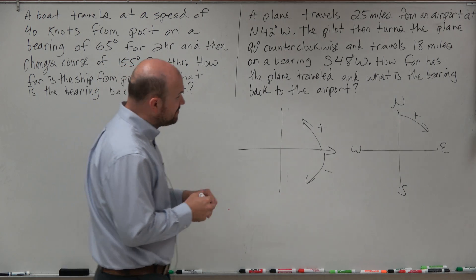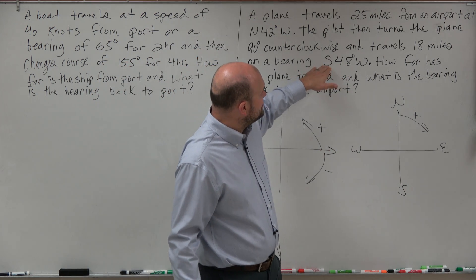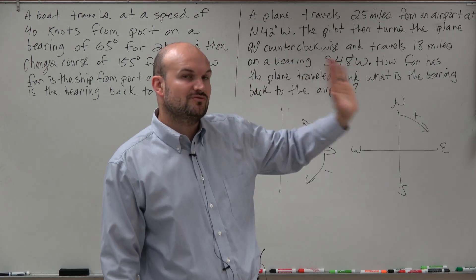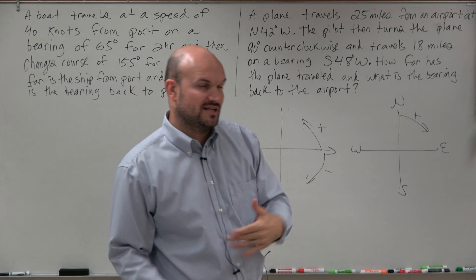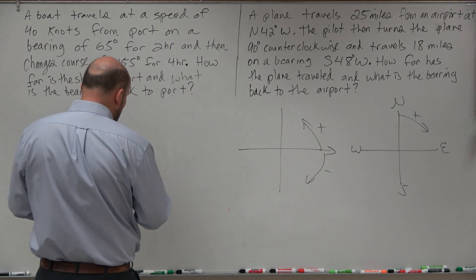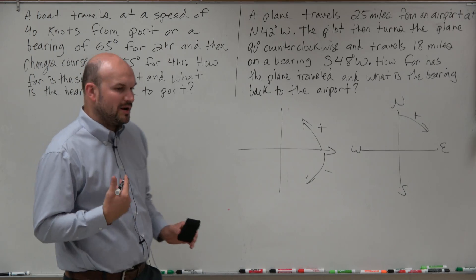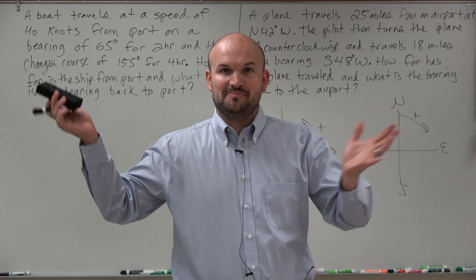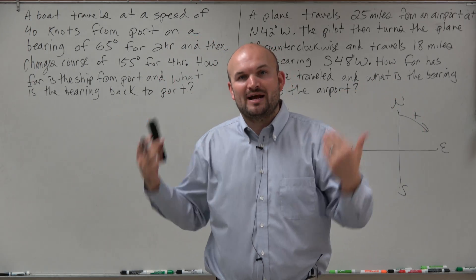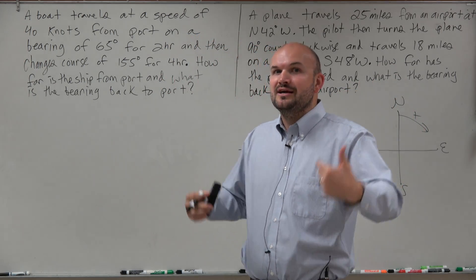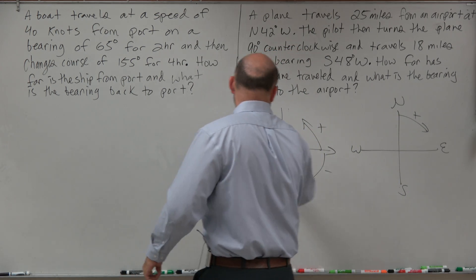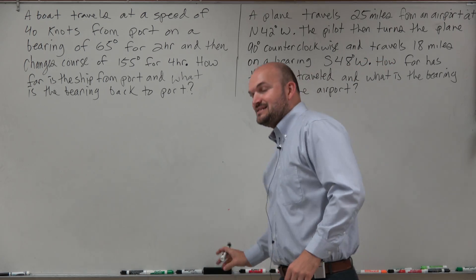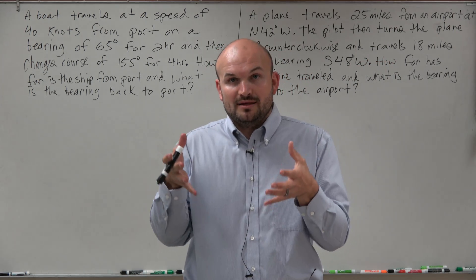There are a couple different ways we could do bearings, which I'll work with both. Bearings usually start with north or south, then indicate how many degrees in the east or west direction. Regardless of whether we're using bearings or some other word problem, we still need to create right triangles, because we can only apply trigonometric functions on right triangles. To understand where those right triangles are, the best thing is to take our information and draw a picture.